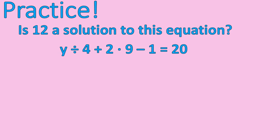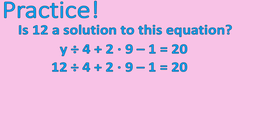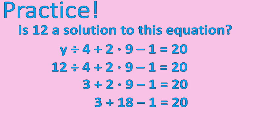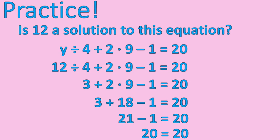Time for a little bit of practice. Is 12 a solution to this equation? Pause the recording and try to solve that one. We plug the value of 12 in for y. Now we solve using the order of operations — first multiplication and division, starting from the left moving to the right. 12 divided by 4 is 3, and 2 times 9 is 18. Now we have addition and subtraction left: 3 plus 18 gives me 21, and 21 minus 1 leaves me 20. Yes! 12 is the solution to this equation.